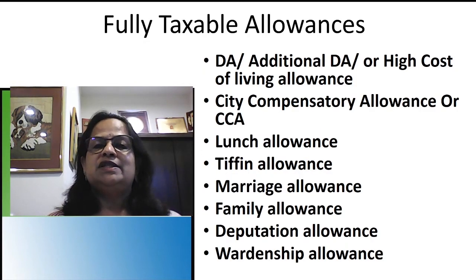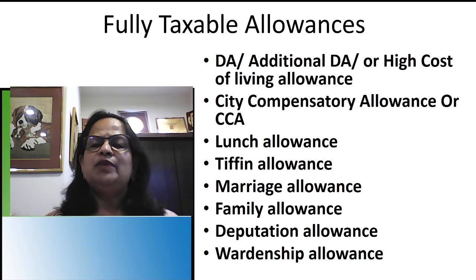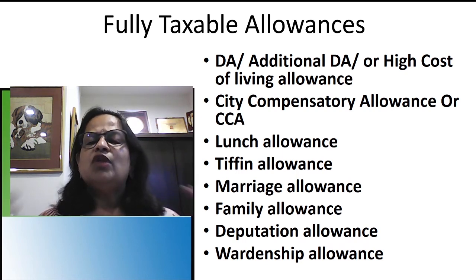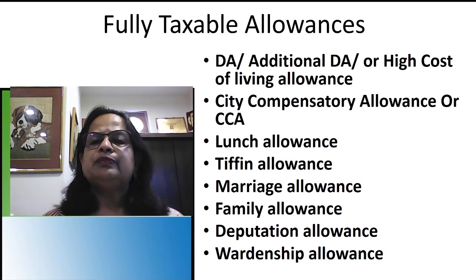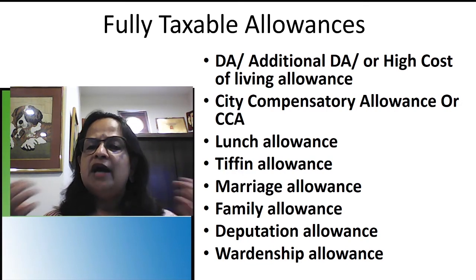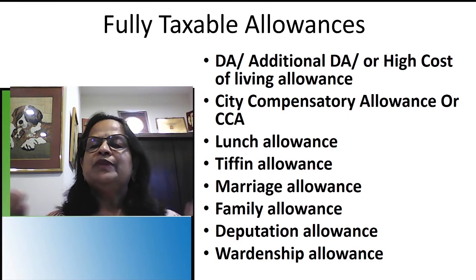Next, fully taxable allowances. If these items appear in the salary, they will be fully taxable. First is dearness allowance, also called additional DA or high cost of living allowance. The central government checks the inflation rate periodically and when they decide to increase DA, they announce an increase of 2% or 3% for central government employees, and state government employees can expect a similar increase.